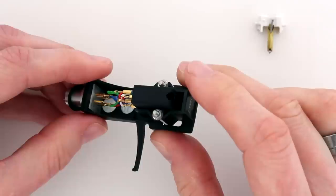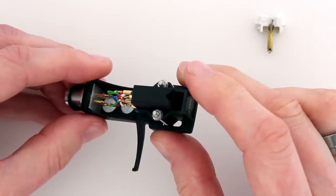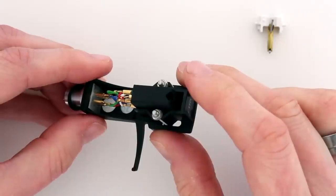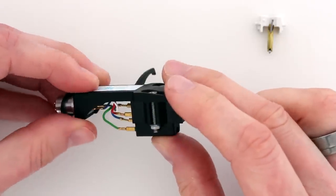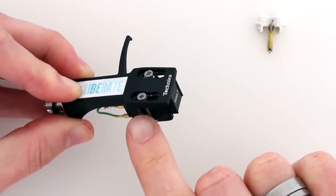I recommend connecting the cables whilst the cartridge is unattached to the head shell, because this gives you a little bit more flexibility and room for manoeuvre. Then once you've done that, you just connect the black cartridge to the head shell with these screws.